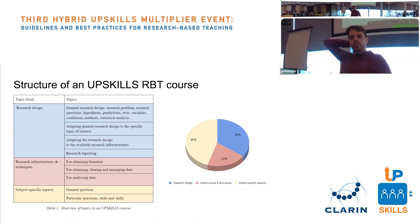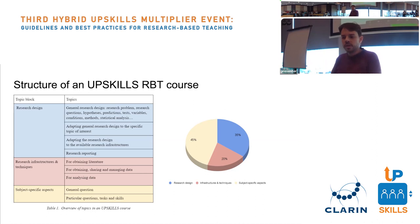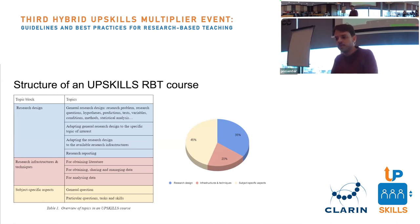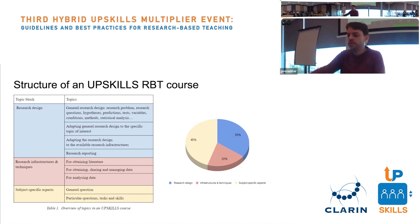Also research reporting: in every research-based course the students produce a research report that is real-life-like, and this needs dedicated attention. The same goes for research infrastructures and techniques — we made a first-level classification of these in our template, which teachers are free to adapt to their reality. Then there is the subject-specific aspect that we of course have nothing to say about — it's usually the title of your course. The ideal distribution we propose is something like 20% for infrastructures, up to 35% for general research design, and then the specific content once the ground is well prepared.